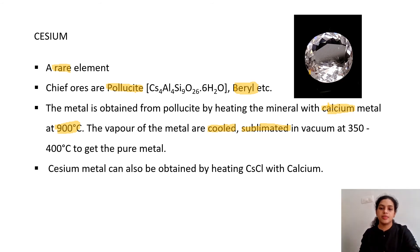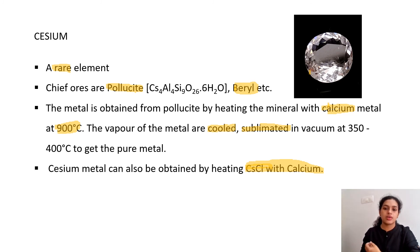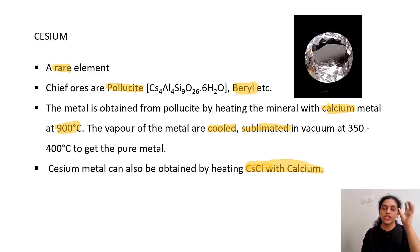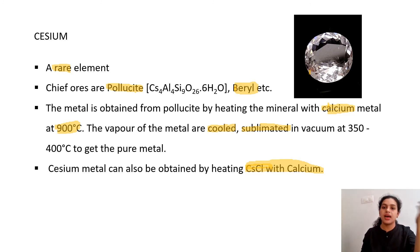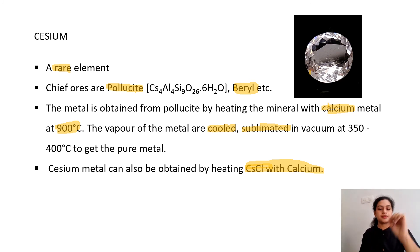There is another method: cesium is also obtained by heating cesium chloride with calcium. Most alkali metals can be extracted from their chlorides — a common pattern is that the chloride is fused with something else to obtain the desired metal.